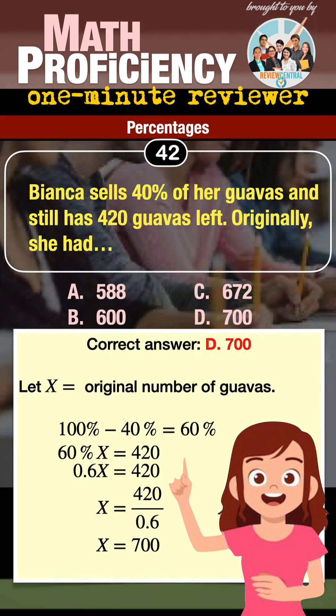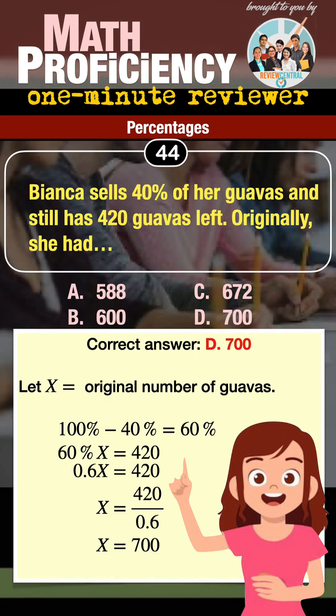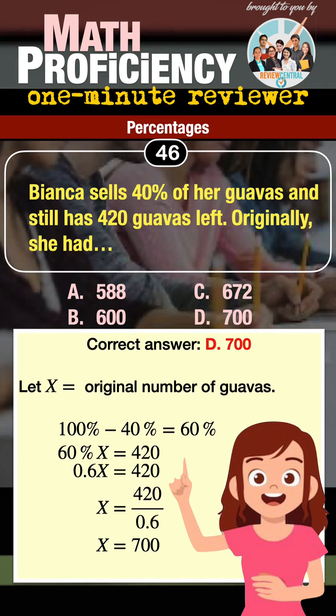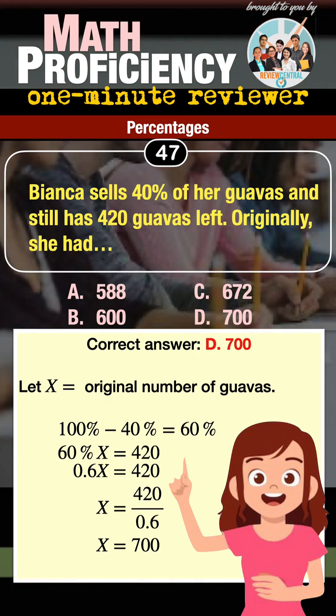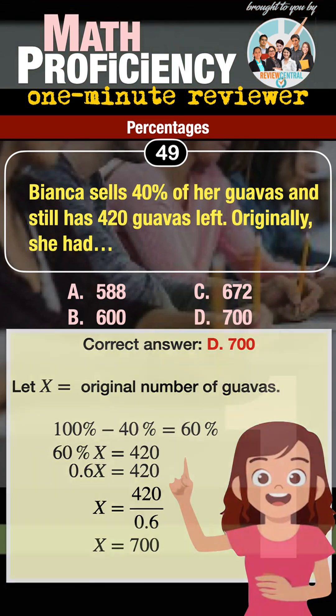In equation form: 0.6x = 420. Solving for x, you should quickly arrive at 700 as the correct answer.